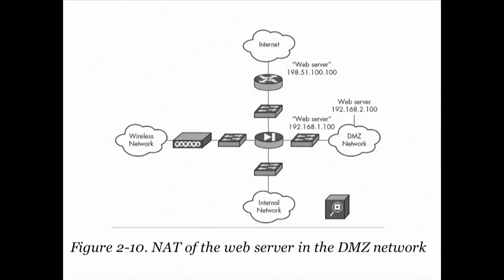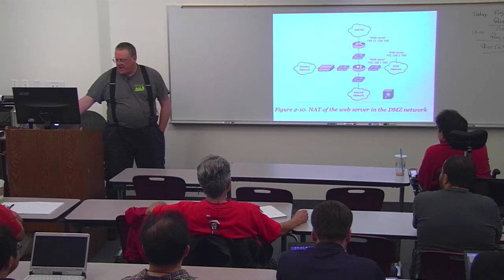With network address translation, your local web server may have a private address, but you're going to have the web server specified with a public address listening on a port. When it gets requests to that public address, your internal devices will forward it to the private address — that's port forwarding. This is what people have to do at home if you run games and your machine is acting as a server: you have to configure port forwarding on your router, or other people can't connect to you.